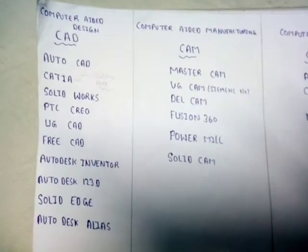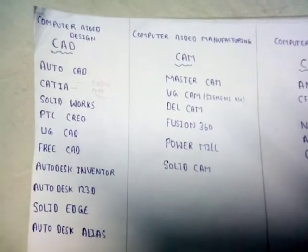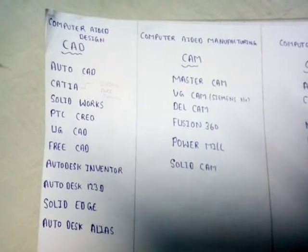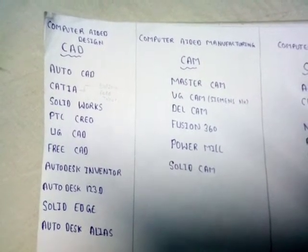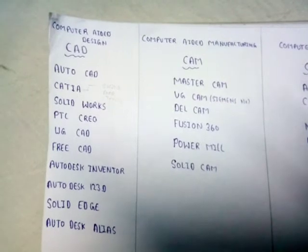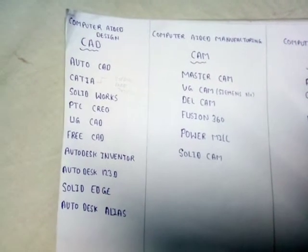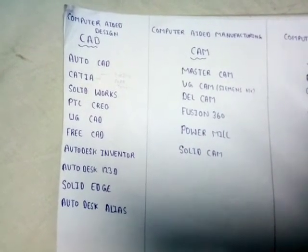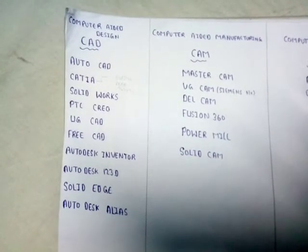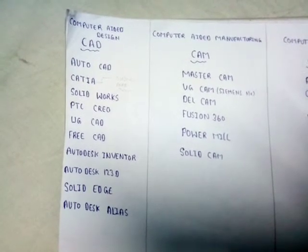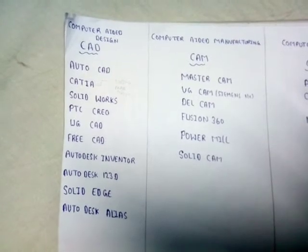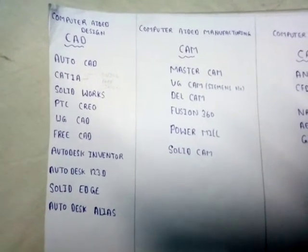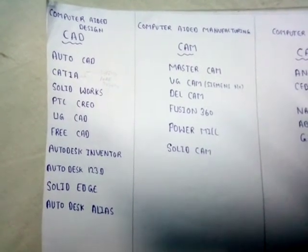Before proceeding, I want to introduce the definition of manufacturing — it is the process in which raw material is processed with the help of man and machine to obtain a finished product. There are different types of manufacturing processes: forming, joining, and machining. Under forming, it includes rolling, forging, extrusion, etc.